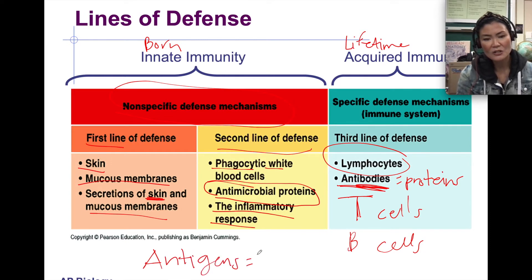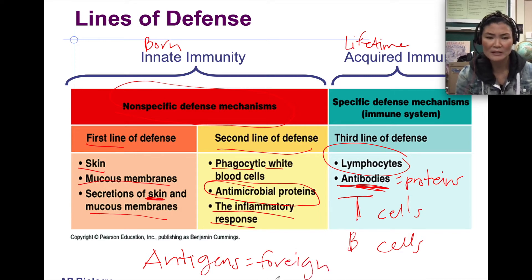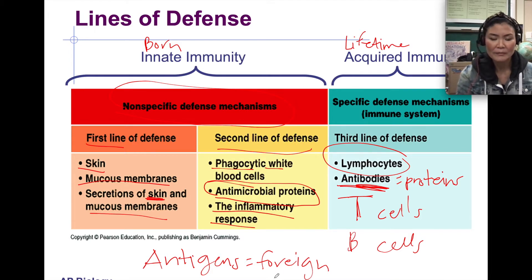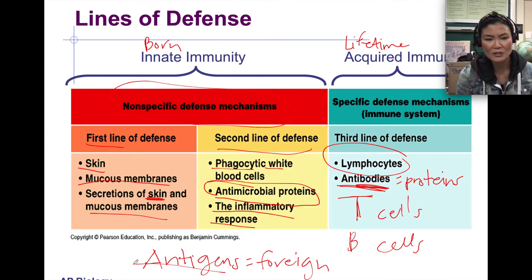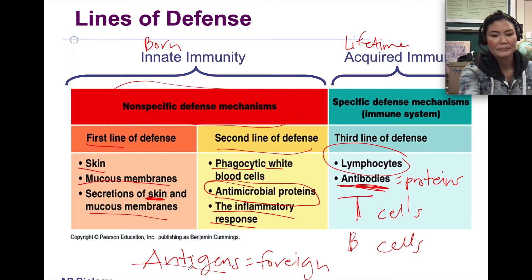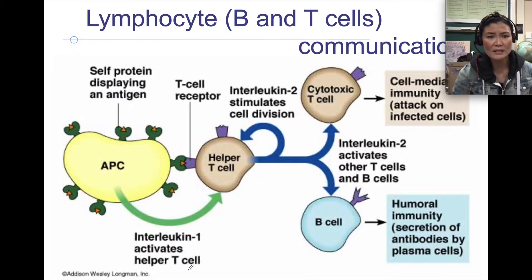Antigens are foreign substances — they could be pathogens, viruses, or bacteria. For people allergic to pollen, pollen is considered an antigen because it's foreign and your immune system responds to it. So antibodies are proteins produced by B cells that are going to attack an antigen.